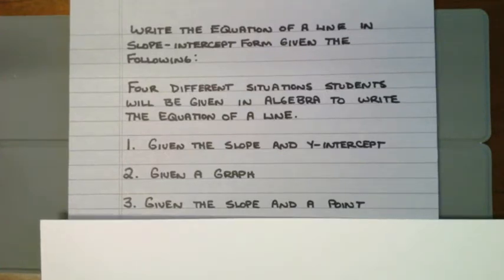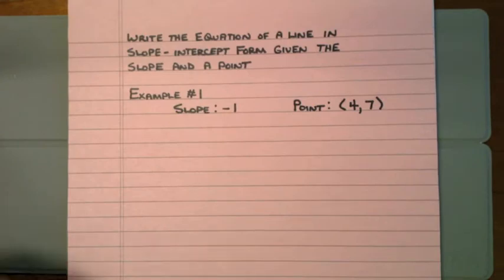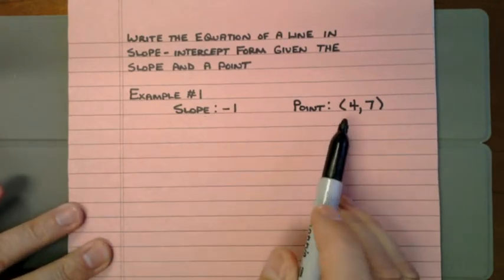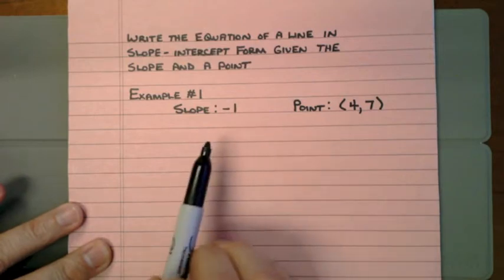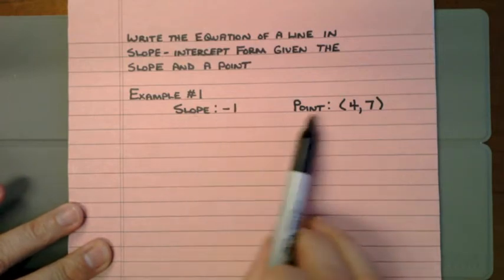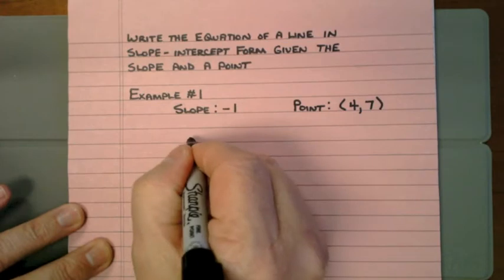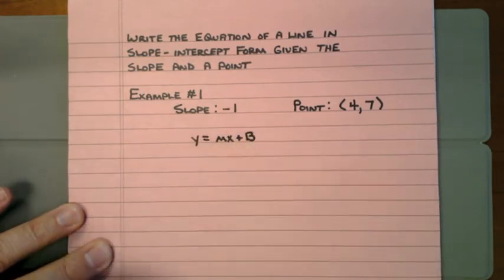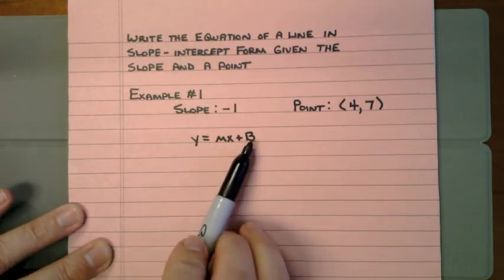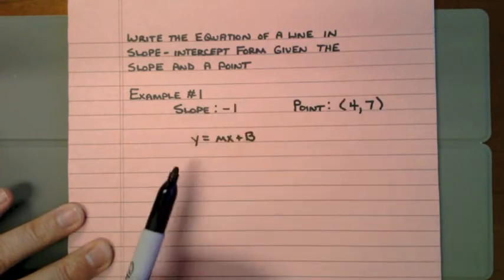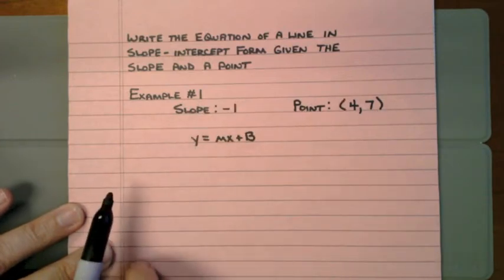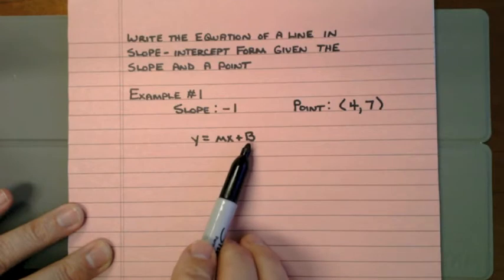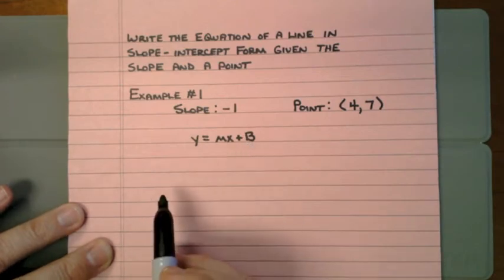Let's look at example number one. They've given you the slope and a point on that line. To write the equation of a line, you need a slope and the y-intercept. We're going to use y equals mx plus b and plug in the given information. The one thing that's missing is the y-intercept — we'll solve for b, and it will tell us what the y-intercept is.